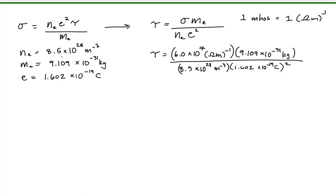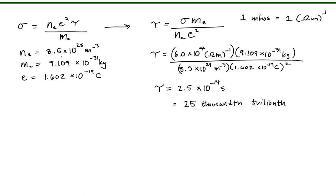After doing my unit check — and you should confirm the units work on this — and plugging into my calculator, I get the mean time of collisions between the conduction electrons in copper is equal to 2.5 times 10 to the minus 14 seconds. Now that's an extremely short amount of time. 2.5 times 10 to the minus 14 is equal to 25 thousandths of a trillionth of a second — an insanely short amount of time.